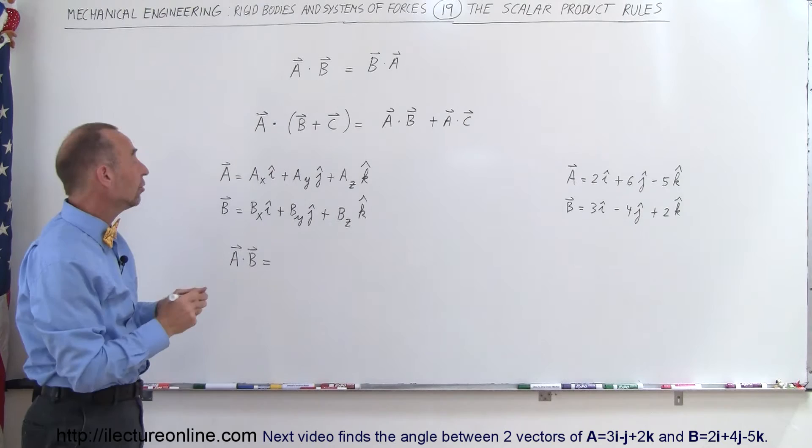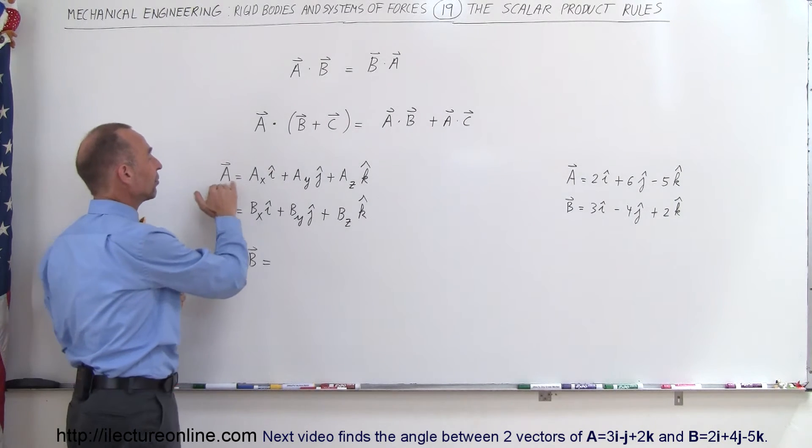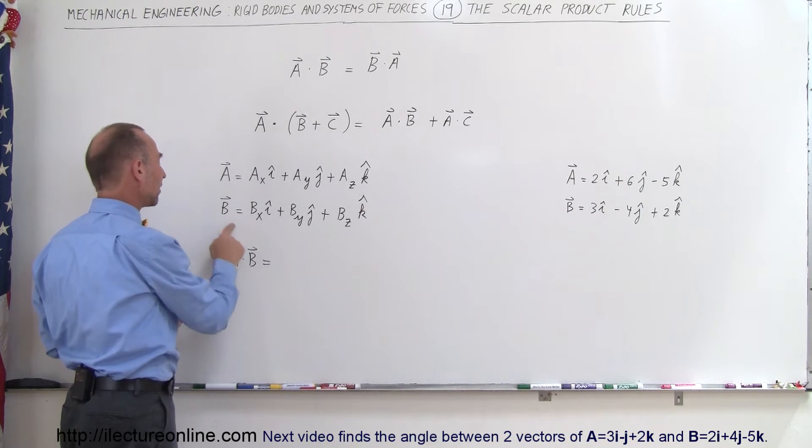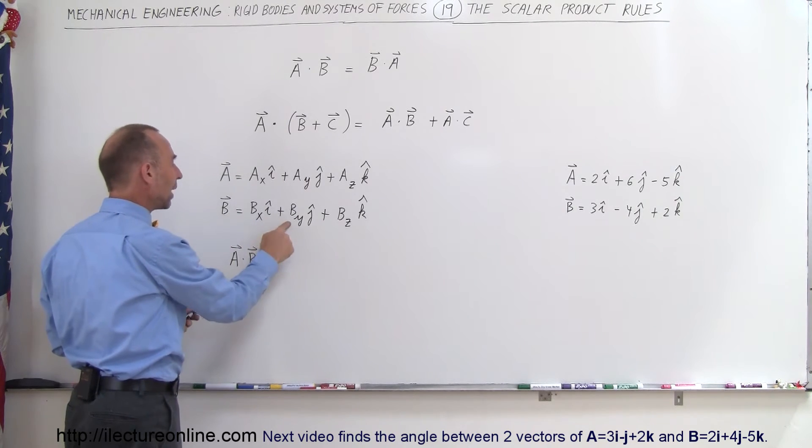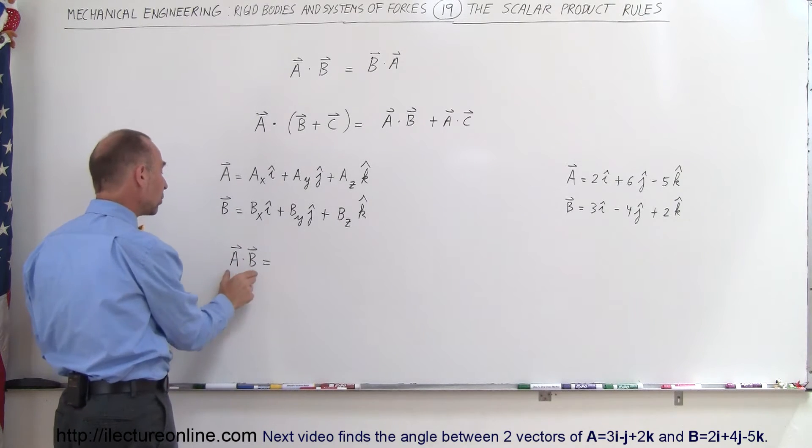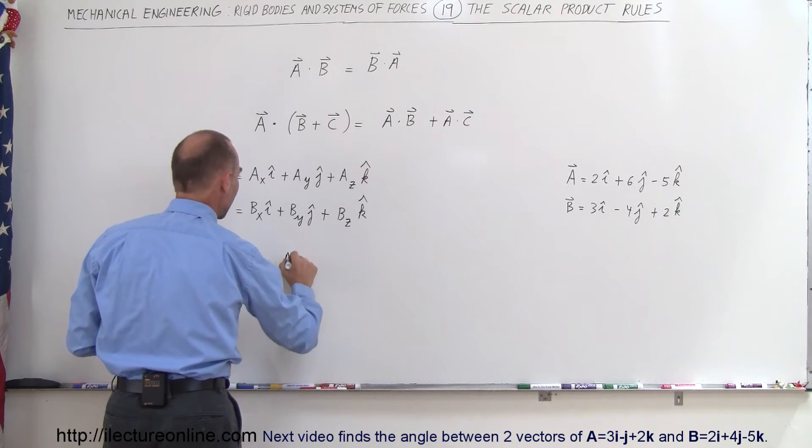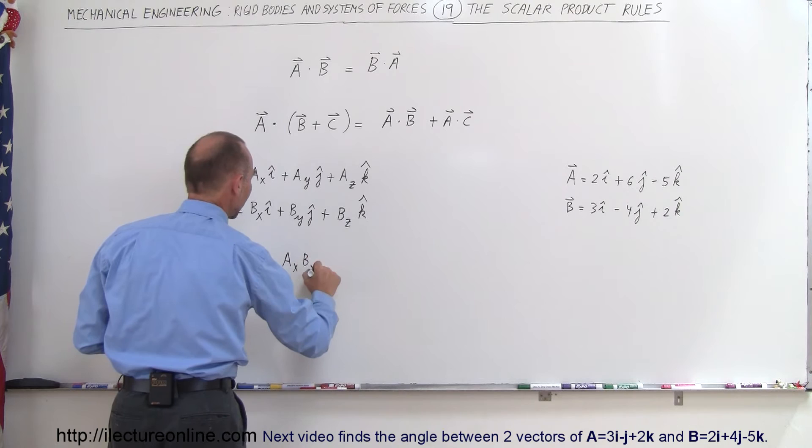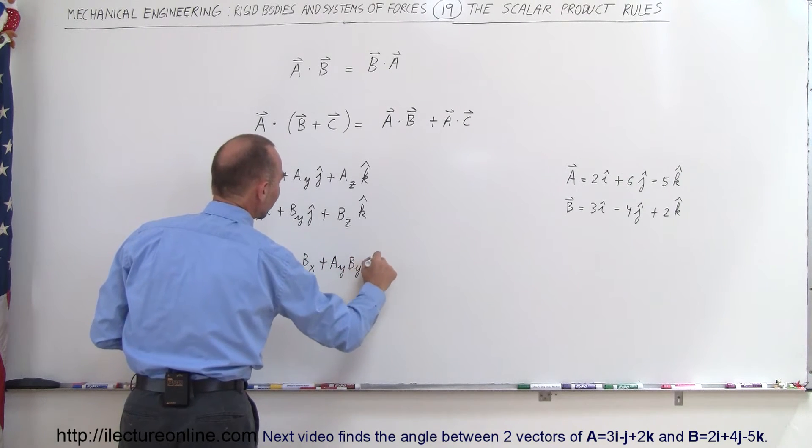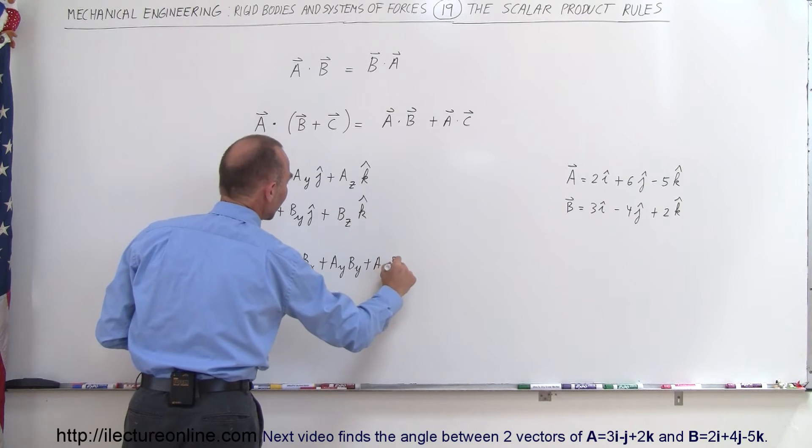And also, which is really handy to know, let's say we have here vector A which has an X component, a Y component, a Z component, and we have vector B which has an X component, a Y component, and a Z component. It turns out that the scalar product between A and B can be written as AX times BX plus AY times BY plus AZ times BZ.